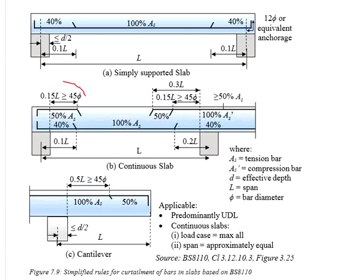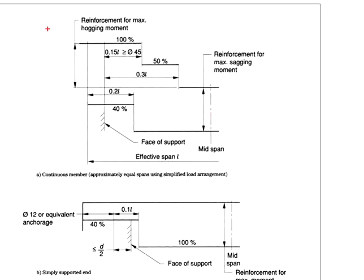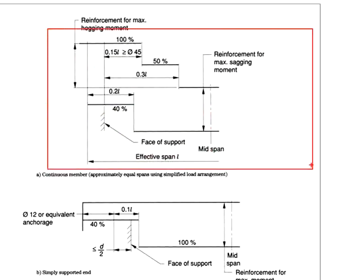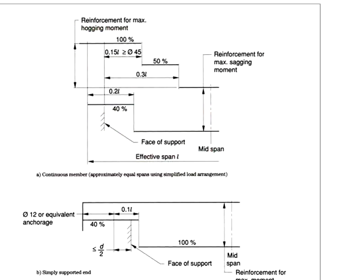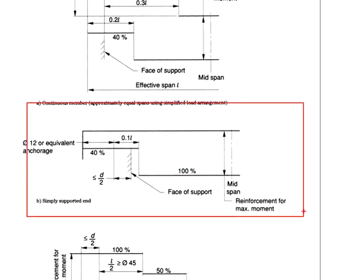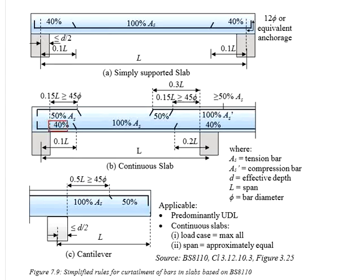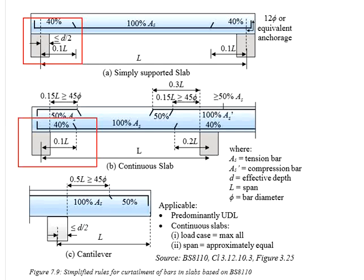How about the other end, which is the end span? Since it is not specified in the diagram for the continuous member, we may adopt this approach: keep 40% of the tension reinforcement at the bottom, curtailed at the distance of 0.1 times the effective length, allowing the reinforcement to be anchored into the support. That is why this end and the simply supported end are identical.